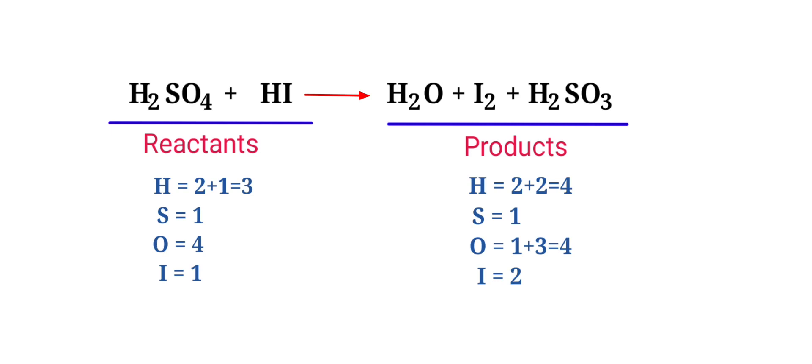The number of atoms are not balanced on both sides. To balance the chemical equation, we need to make use of coefficients. A coefficient is a number that we place in front of a chemical formula.